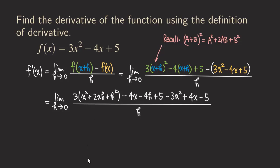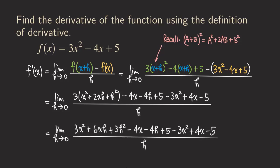Let's continue to distribute. We are going to get three x squared plus six xh plus three h squared — we are distributing the three — and then the other stuff just copy. Now we can start combining like terms and canceling terms that are the same. The three x squared and the negative three x squared cancel. The negative four x and the positive four x cancel.